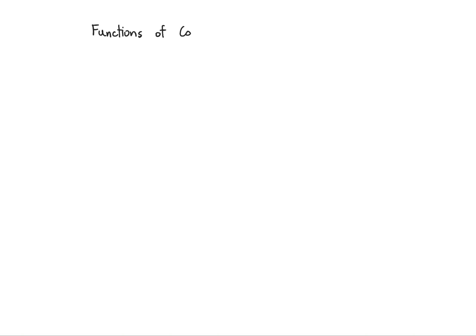Let's talk about functions of continuous random variables. We've worked out expected values of functions of continuous random variables, but we avoided calculations about the PDF of the new random variable. The reason we avoided it is it's a little bit trickier than the discrete case. The discrete case is really about remapping how point masses of probability are distributed, whereas here you have to be quite a bit more careful in your calculations.